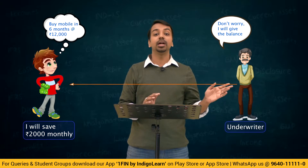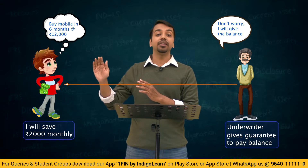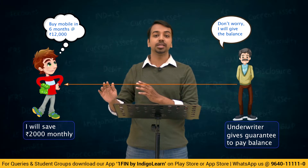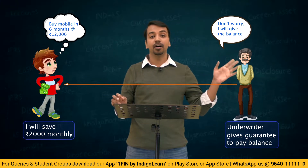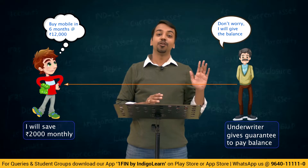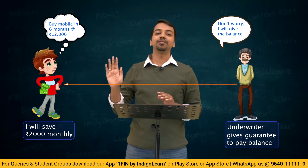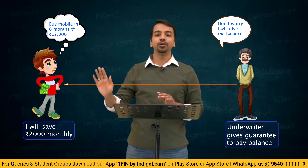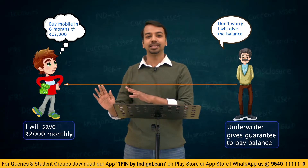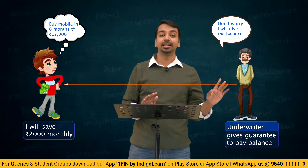You go to your father and tell him your plan. Your dad says, you don't worry — save however much you can, I will give you the balance amount. If your savings are short by some amount, your father will pay the balance. Here, your father is playing the role of an underwriter. He is giving an undertaking that if the money saved by you is short, he will pay the balance — he is underwriting the risk of shortfall.